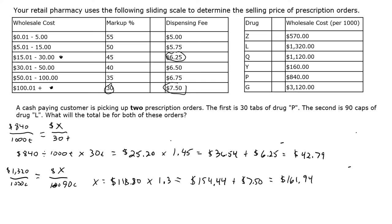To solve the full question, we simply add the total fee for drug P plus the total fee for drug L: $42.79 + $161.94 = $204.73, which is the total charge. It took a lot of steps, but if you follow this process and leverage cross multiplication, this mathematical approach will apply to most of what you encounter on the PTCE, even though the specific questions will vary.